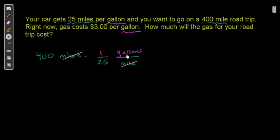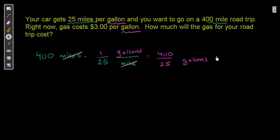So, how many gallons do we need for 400 miles? Using the ratio of 1 gallon per 25 miles, for 400 miles we need 16 gallons.